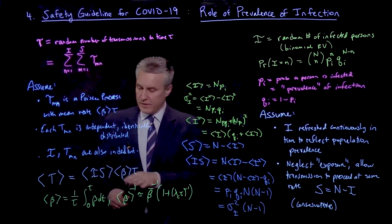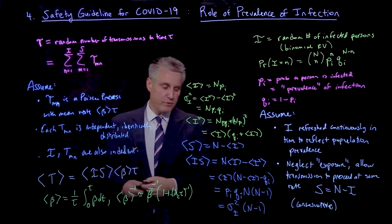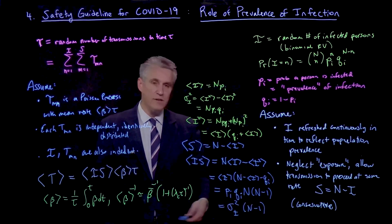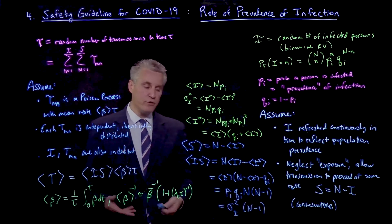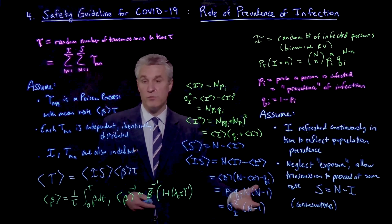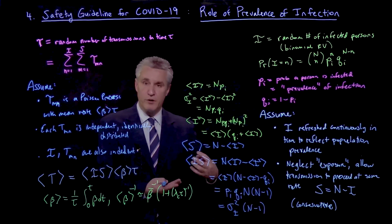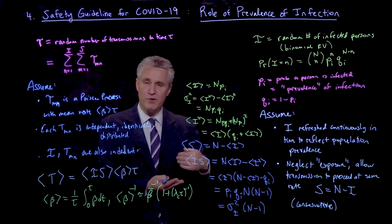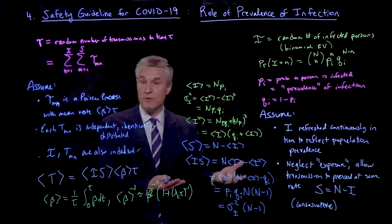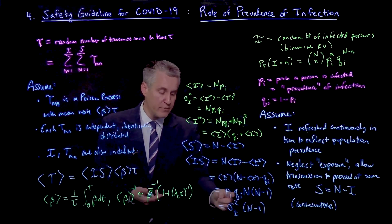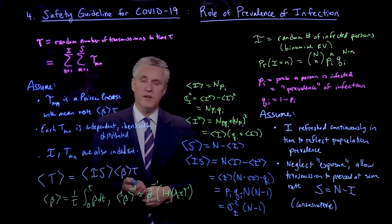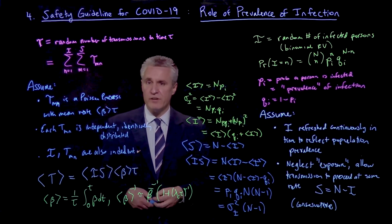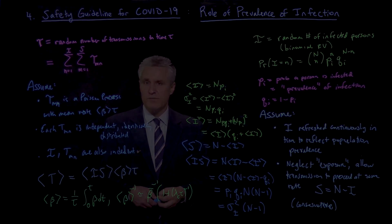So now we basically have an expression for the transmission rate in terms of the number of people in the room. Essentially it's N minus 1, which you may recall was the transmission rate when there's one infected person and N minus 1 susceptibles — but times this factor sigma_i squared, which is actually the fluctuation in the infected number.